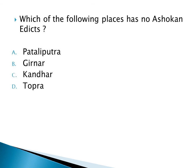Which of the following places has no Ashokan edicts? Option A: Pataliputra, Option B: Girnar, Option C: Kandar, Option D: Topra. The right answer is Option A: Pataliputra.